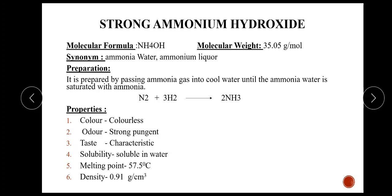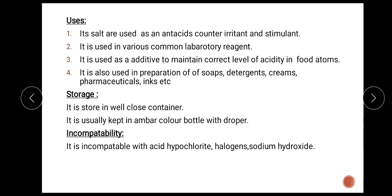The next monograph is strong ammonium hydroxide. The molecular formula is NH4OH and the molecular weight is 35.5 grams per mole. Synonym is ammonia water or ammonia liquor. Preparation: it is prepared by passing ammonia gas into cool water until the water is saturated, forming strong ammonium hydroxide. Properties: it is colorless with a strong, pungent odor, characteristic taste, and is soluble in water. Melting point is 57.5°C and density is 0.91 g/cm³. Uses: its salts are used as antiseptics, counter-irritants, and stimulants. It is used as a common laboratory reagent, as an additive to maintain correct acidity levels in food, and in the preparation of soaps, detergents, creams, pharmaceuticals, and inks.